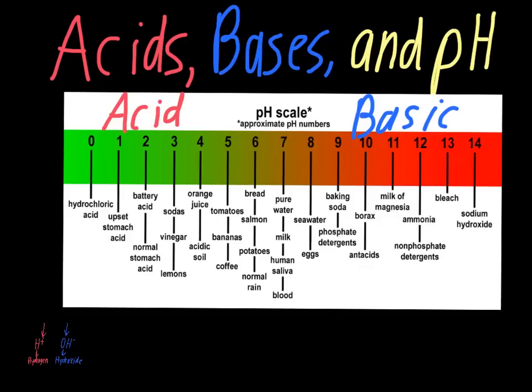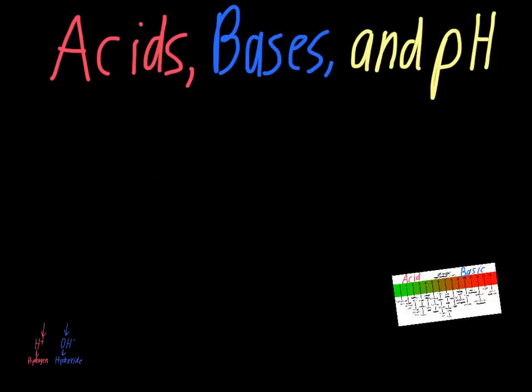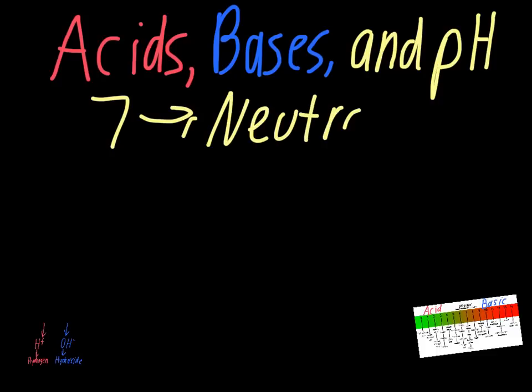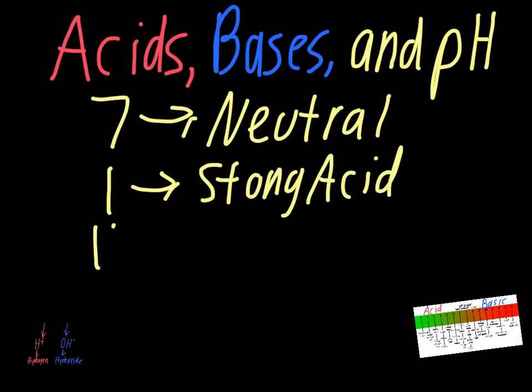So, the main thing to remember with the pH scale, and I'll write a few of these things down for you so you can keep them for pH, 7 is neutral. 1 is going to be a very strong acid. 14 would be a strong base.